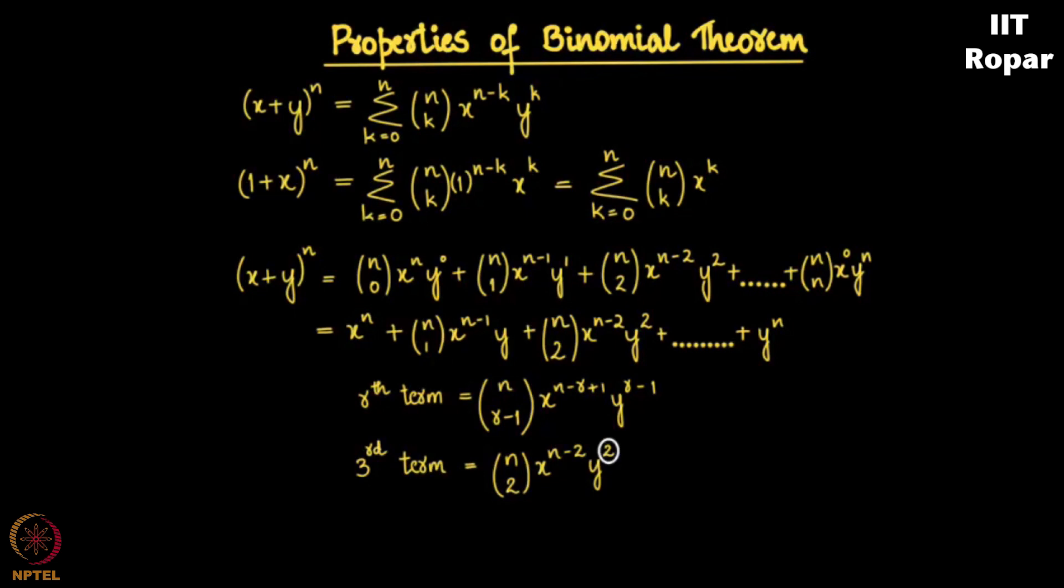So this is very helpful in solving problems. The rth term is given to be n choose r minus 1 into x power n minus r plus 1 into y to the r minus 1. So you can have this formula and use it to find any term in the expansion.